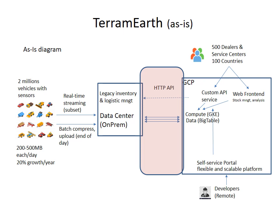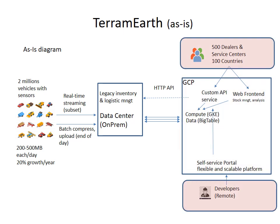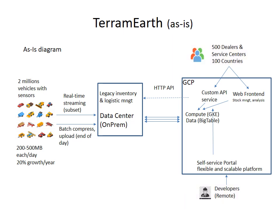In GCP there will be multiple products used to serve TerramEarth's needs. There are two main stakeholders who need access to GCP: number one is 500 dealers and service centers around the world, who need access to the web front end and custom API to perform data analytics and understand the status of each vehicle. Number two is the developers, both internal and external, who need remote access to GCP to perform their development work.